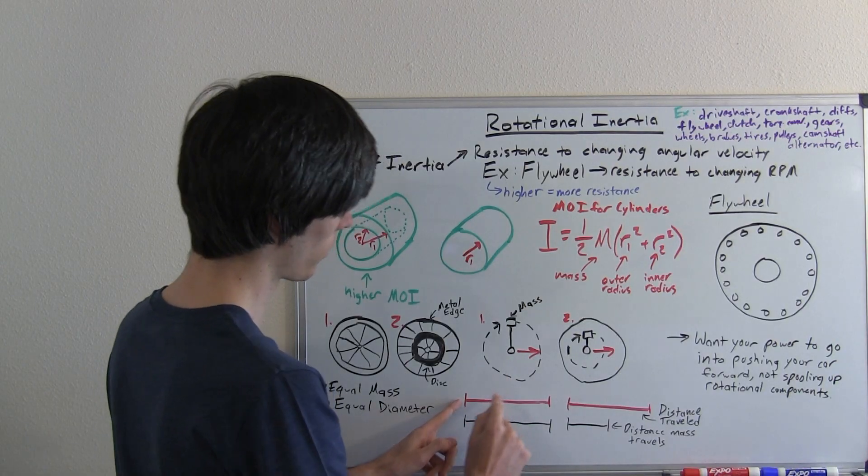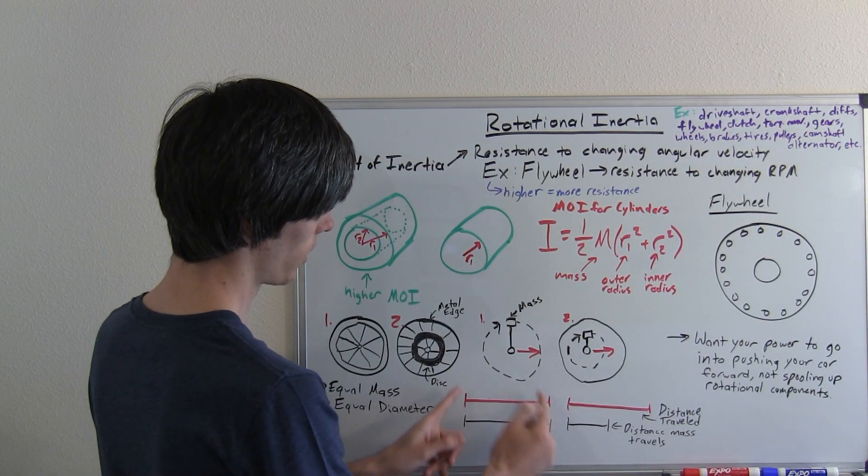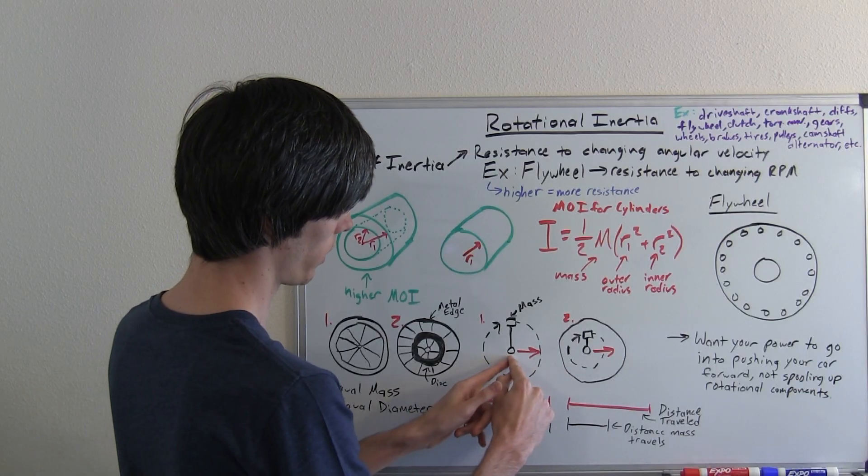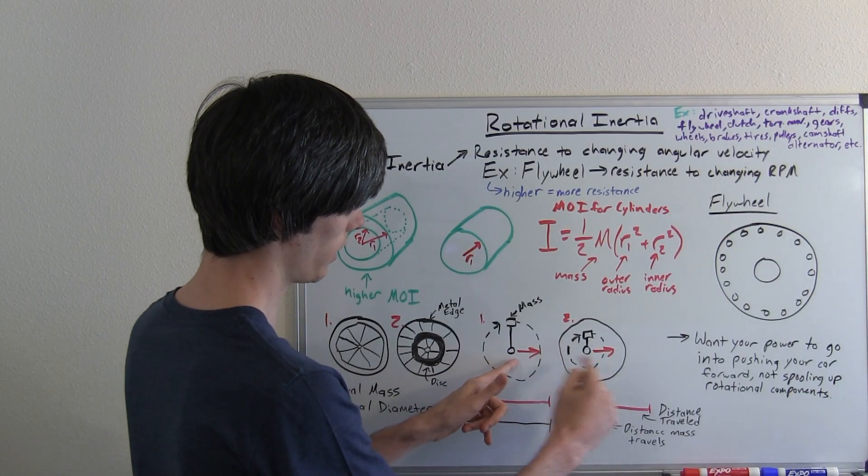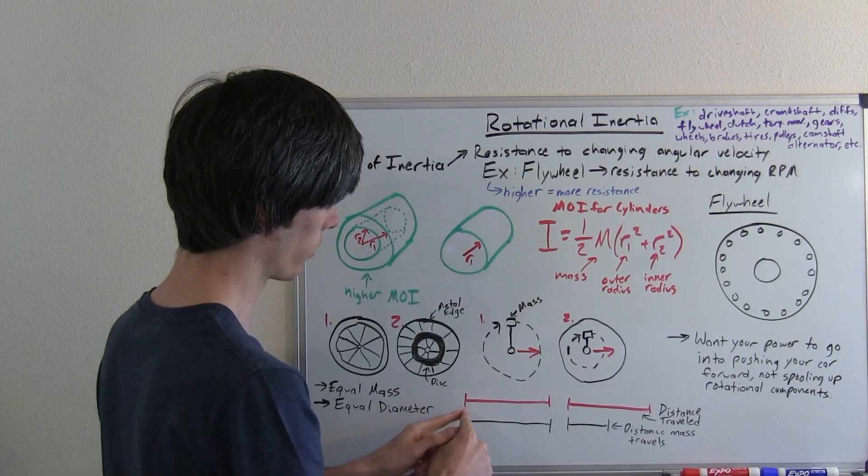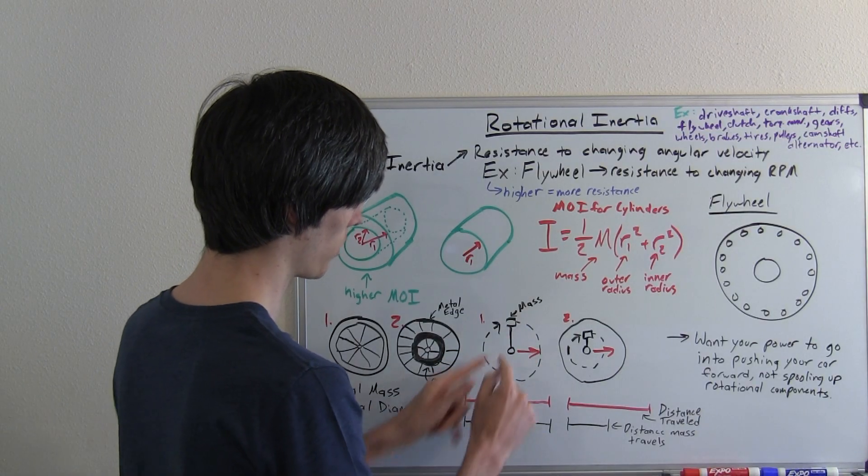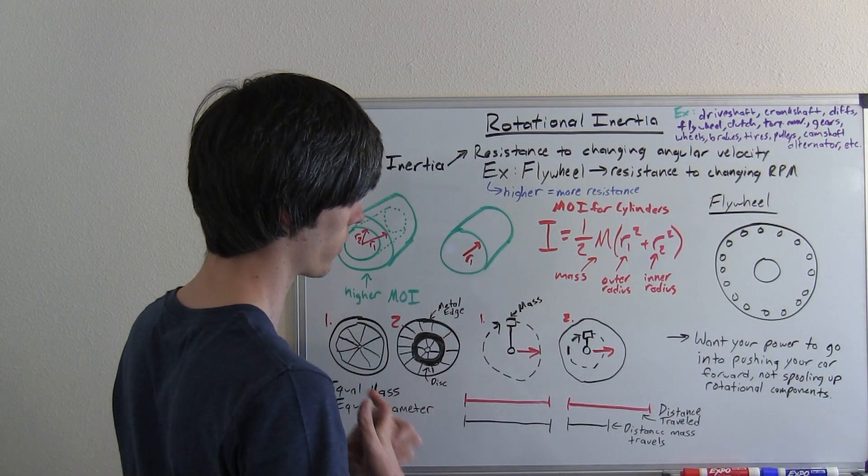The distance that the wheel travels is this distance, one revolution. So this point is now that circumference in distance away with one revolution, and that mass also travels that same distance because the mass is all the way out at the outside edge.